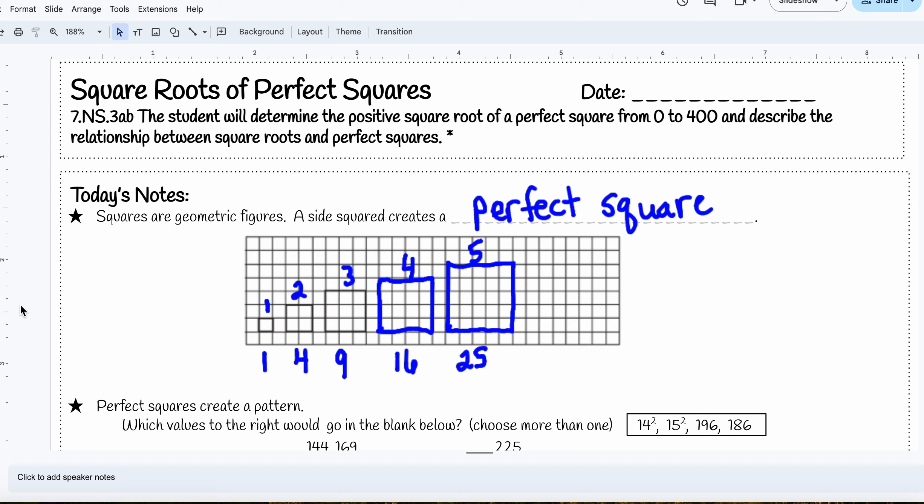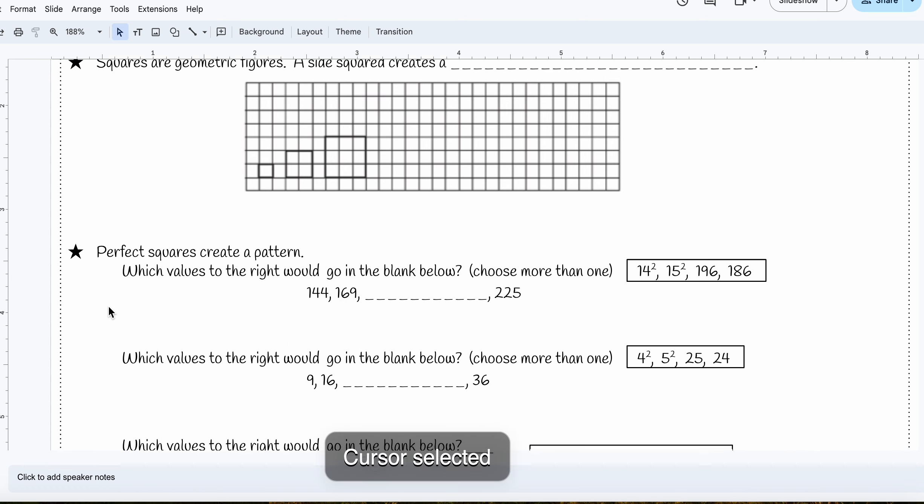So perfect squares create a pattern. Which values to the right would go in the blank below? And the hint is there's more than one answer. So let's take a look.